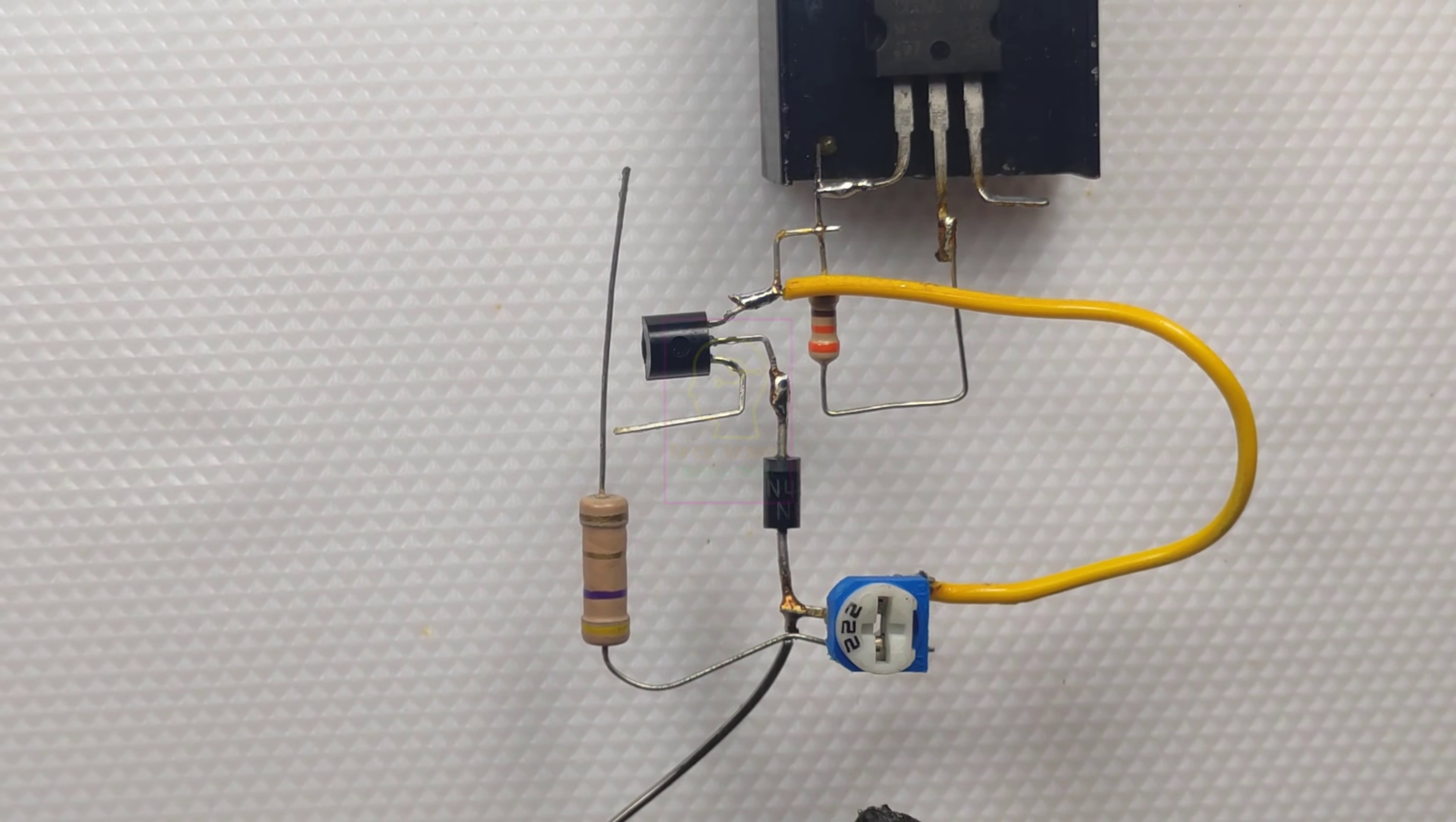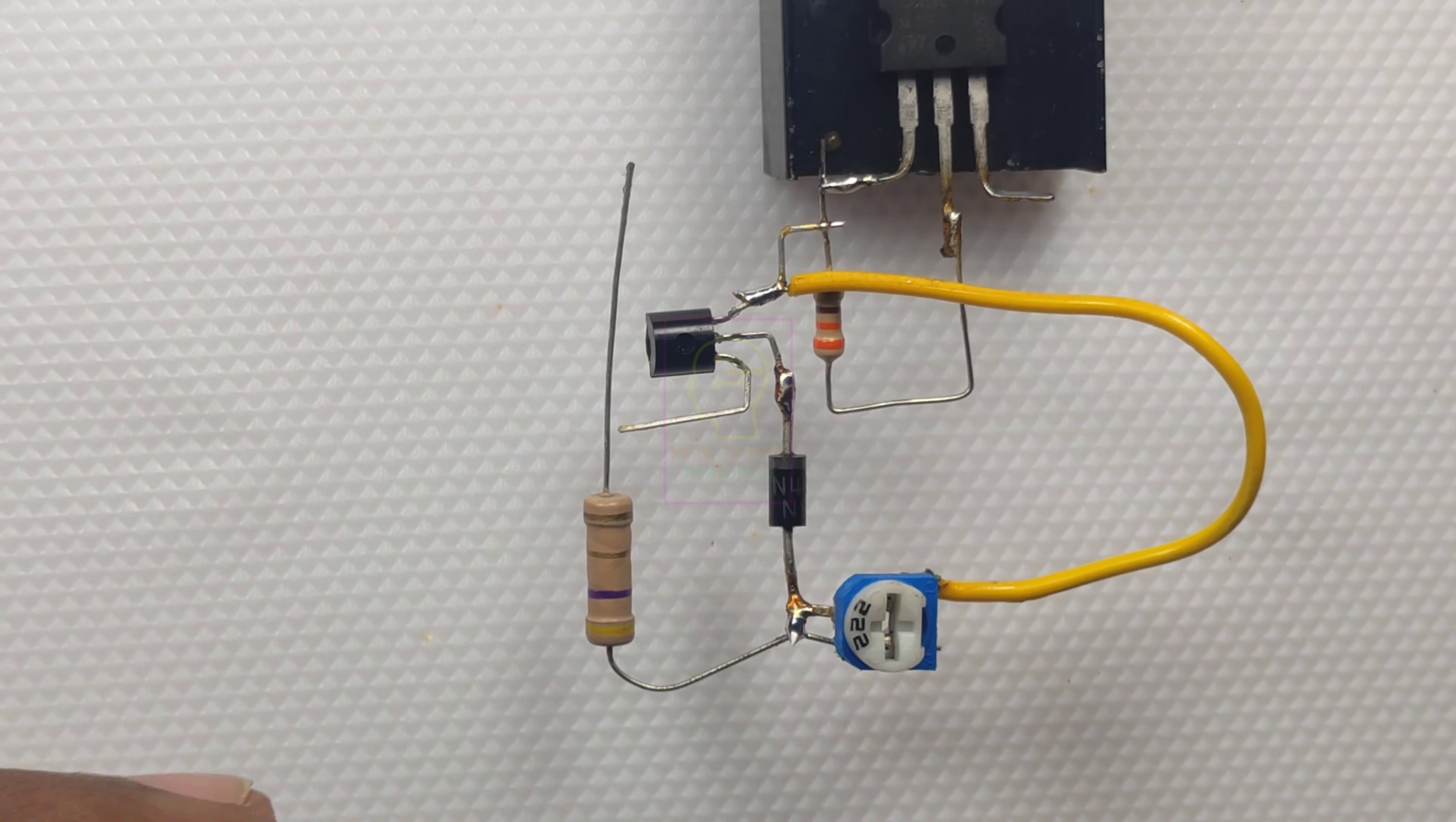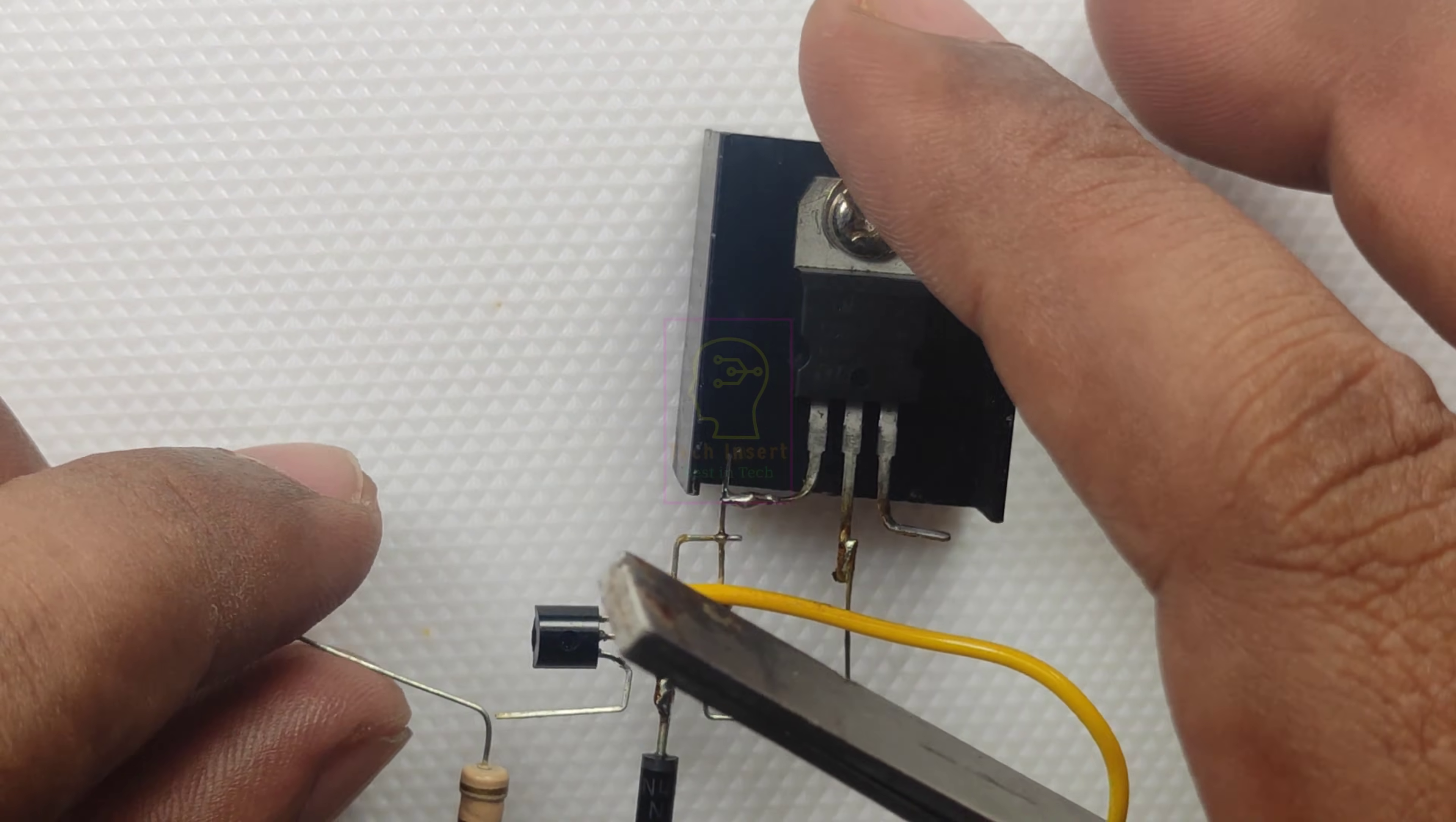This will sustain the battery voltage. Now the charger will be in voltage mode with very minimum charging current, which is in the range of microamperes. The battery will always be in fully charged state. Let us continue assembling this.